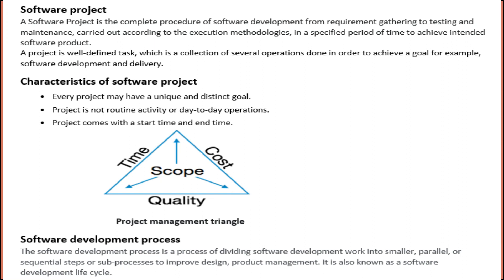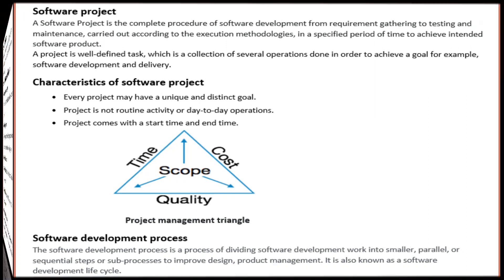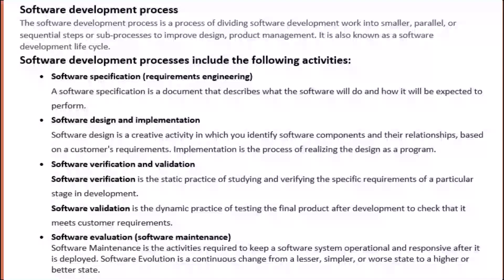Characteristics of a software project: every project may have a unique and distinct goal. A project is not a routine activity or day-to-day operation. A project comes with a start time and end time. Here is the project management triangle, also called the triple constraint, where you can see elements like cost, time, quality, and scope.